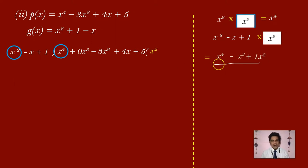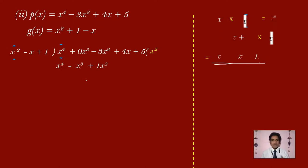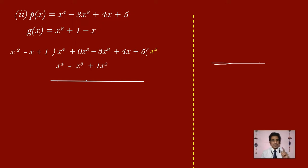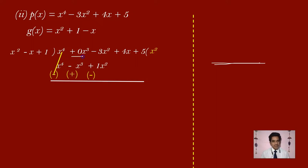Write x square in the quotient and write x power 4 minus x cube plus x square below the dividend. Now do the subtraction — change the signs: x power 4 becomes minus x power 4, minus x cube becomes plus x cube, plus x square becomes minus x square. x power 4 minus x power 4 gives 0. Plus 0 plus 1 gives plus 1, so plus 1x cube. This is minus 3 minus 1, giving minus 4x square. Carry plus 4x.